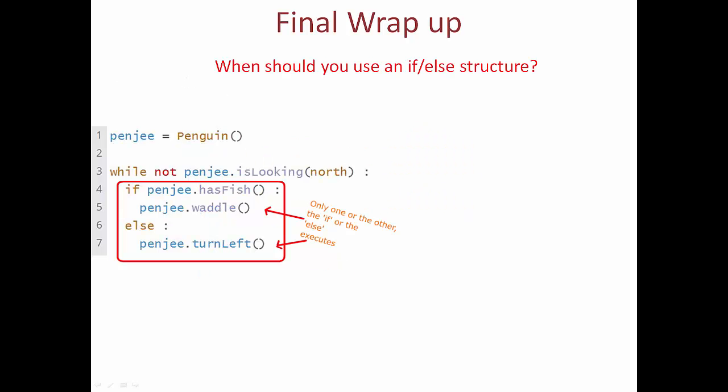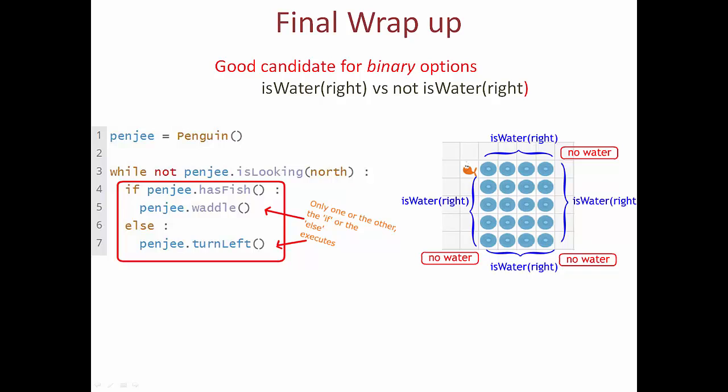So when should you use an if-else structure? Well, it's always a good thing to use when our options are binary. Whether there's water on the right or not is a good example. These cases, where something could be true or false, and the actions are different accordingly, turn up all the time in Penji and go hand-in-hand with if-else structures.